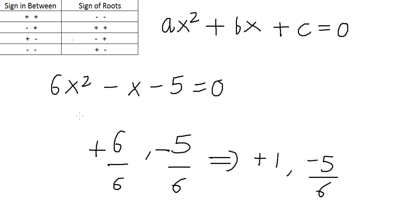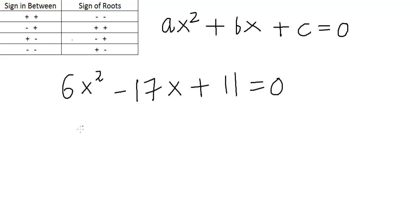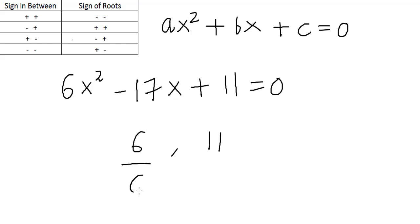Let's look at one last example. Suppose we have to solve 6x squared minus 17x plus 11 is equal to 0. The first thing we do is find the product, which is 66 — 11 into 6 — and the sum which is 17. We can get a sum of 17 by using 6 and 11. Then we divide both by the coefficient of x squared, which is 6 — never forget this step.